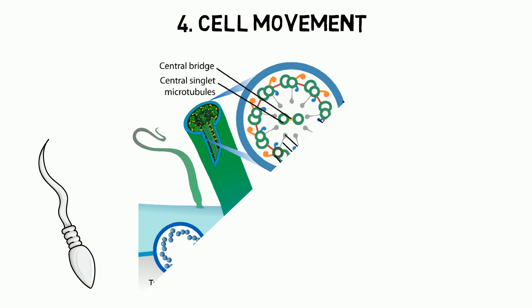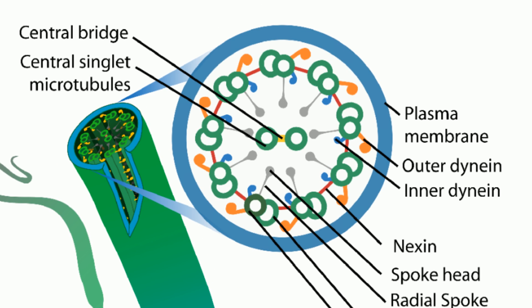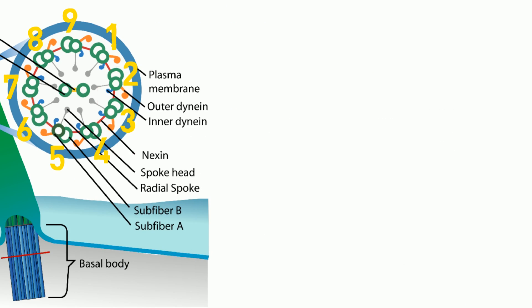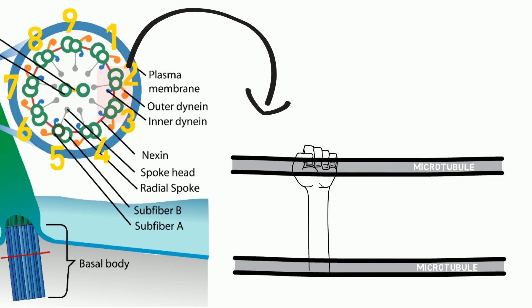The beating of cilia and flagella help to propel cells forward. Cilia and flagella have nine pairs of outer doublet microtubules surrounding a central pair of singlet microtubules. Dynein arms of one microtubule grip the adjacent pair, pull, release and bind again using ATP as energy source.